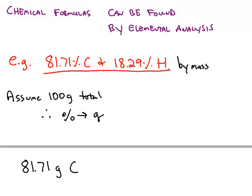In order to translate that into a chemical formula, we're going to start by assuming we have 100 grams of this compound, because then the percentages are simply the same number in grams.